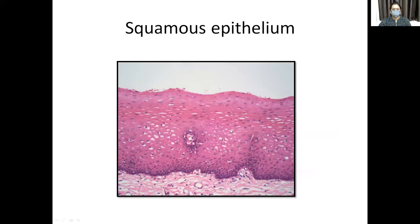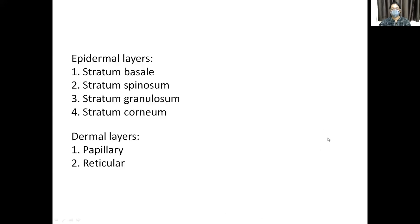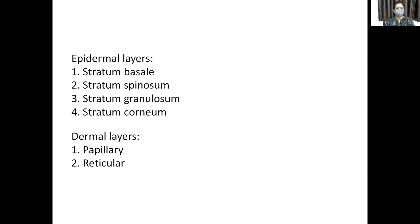Here we see the stratified squamous epithelium, the dermo-epidermal junction, and the dermis. In the epidermis, we have the stratum basale — this is like the brick generator, meaning it has stem cells and undifferentiated keratinocytes which help cells proliferate. That's why in winter your skin gets dry, the dead skin falls off and new cells are regenerated. The stratum basale helps in proliferation and attachment.